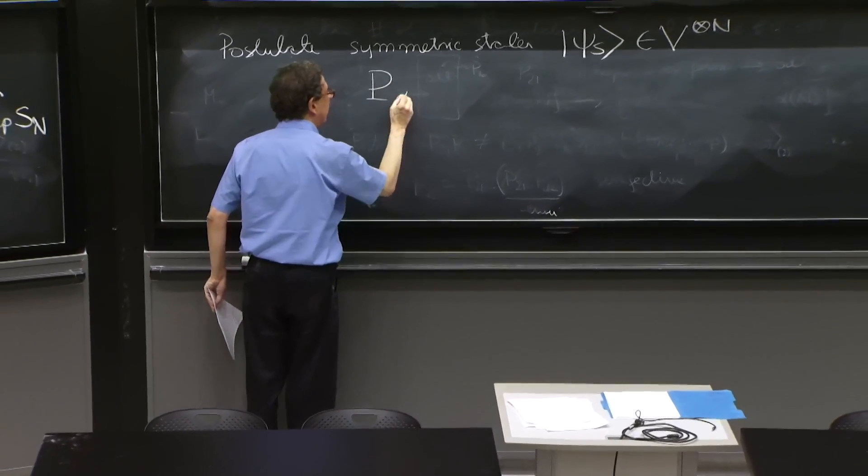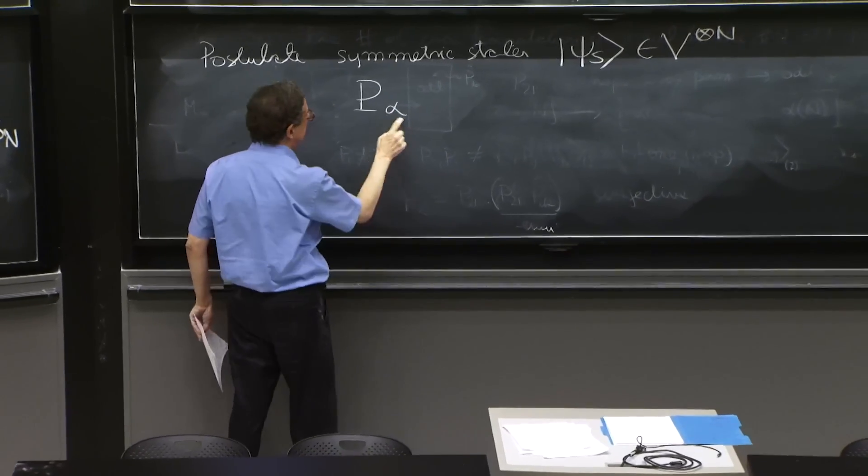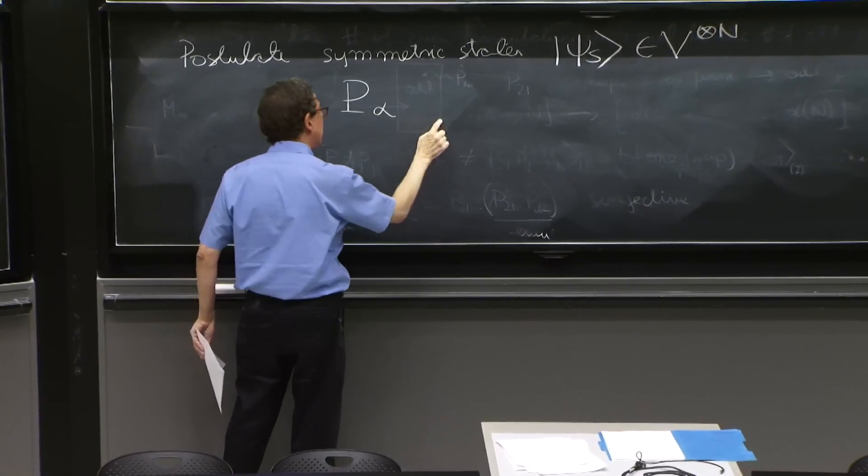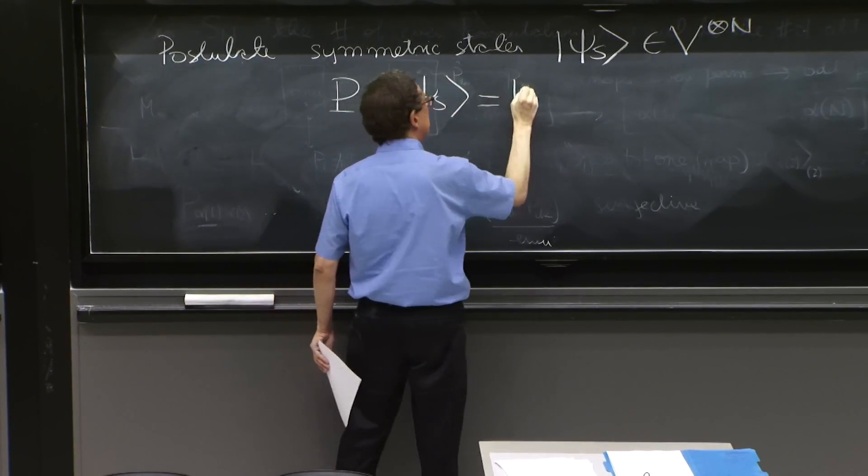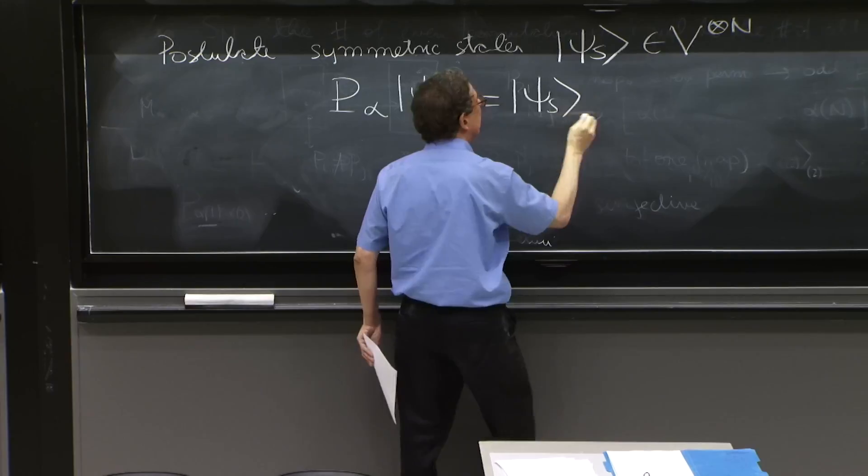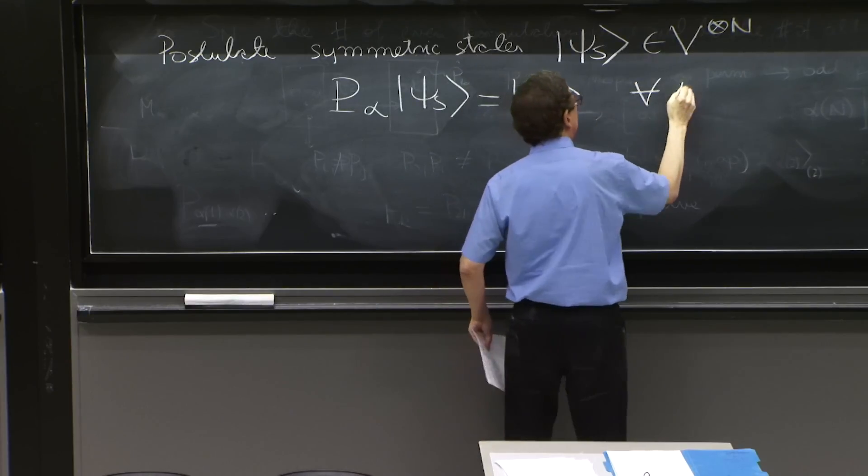The P_alpha, any permutation - remember, alpha means all this set of indices - on psi_s is equal to psi_s for all alpha.